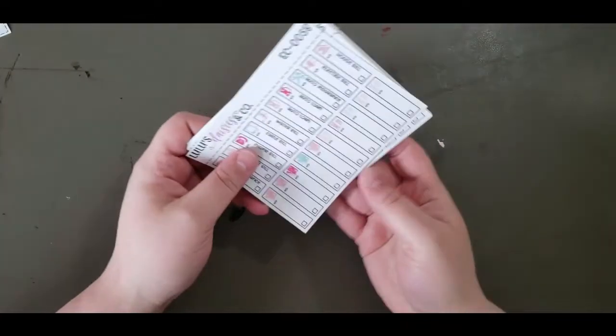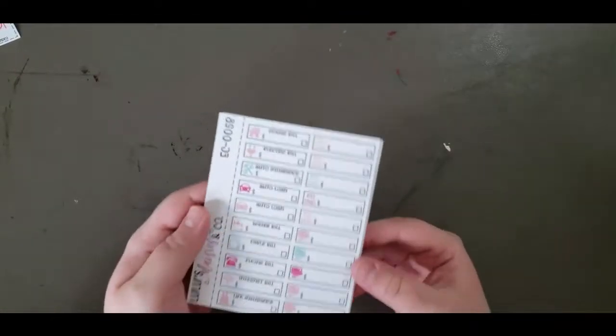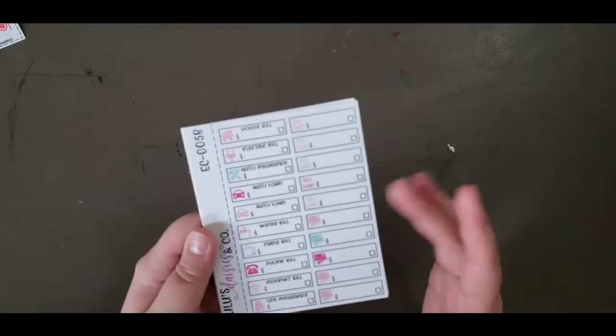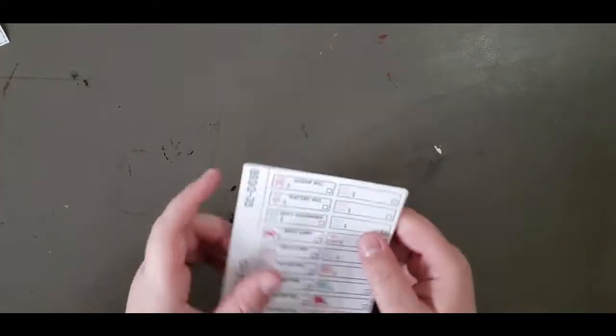So it's 11 of the same sheet just in different color ways, which I'm totally okay with. I like these stickers. I use these a lot in both my monthly and my weekly spreads. So I'm happy to have these and I'm actually really excited.